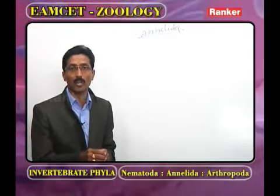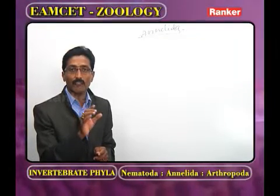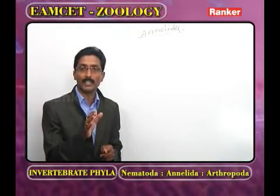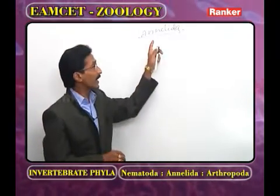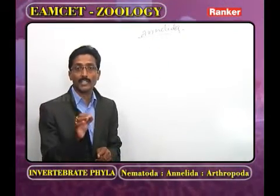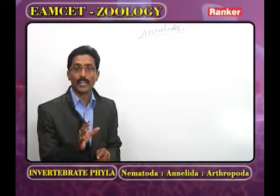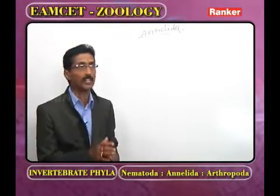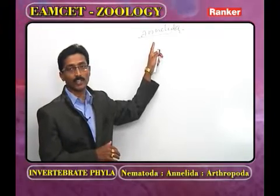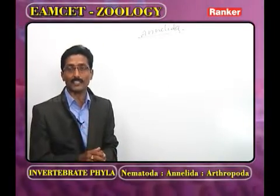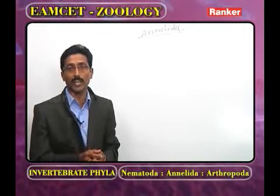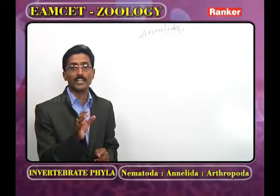Cephalization was first seen in Turbellaria, but it was moderate. In Annelida, cephalization is true — at the anterior end, a distinct head with sense organs is present. Such true cephalization first developed in Annelida. The body wall in Annelida is dermomuscular, consisting of dermis and muscles — specifically circular and longitudinal muscles.